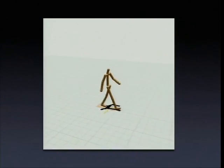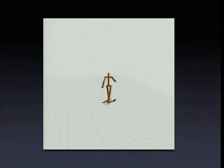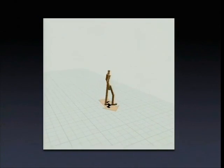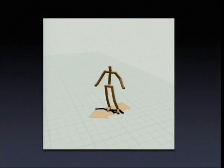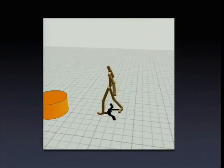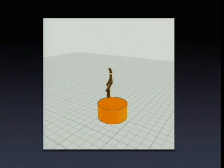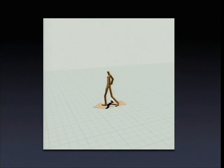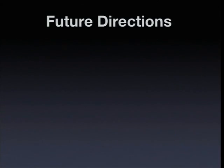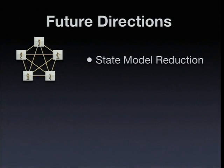This final video shows that we can couple all of these controllers together — starting with the general walking controller, turning it into a spinning controller, then transitioning smoothly into obstacle avoidance and back to spinning. Future directions include moving from a discrete understanding of the motion space to model reduction on the state space itself, which should give a richer set of motions and require less data.